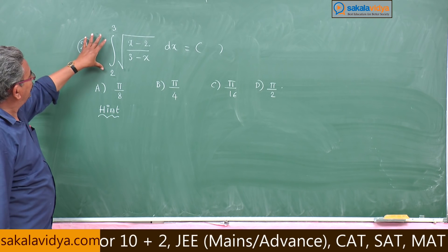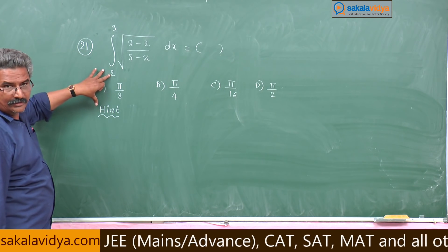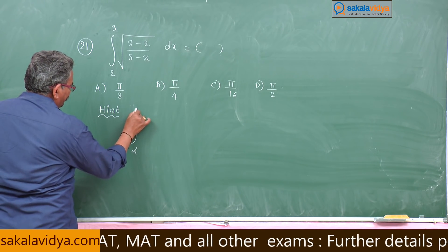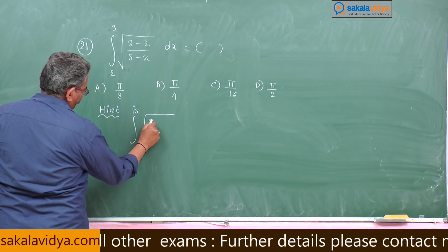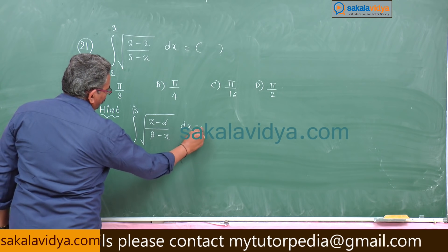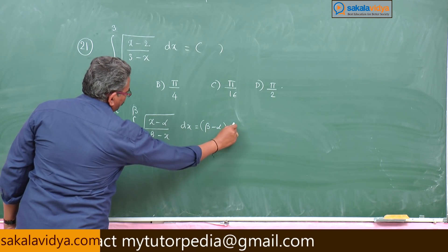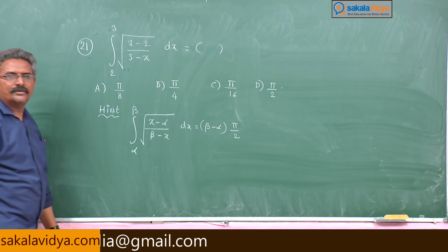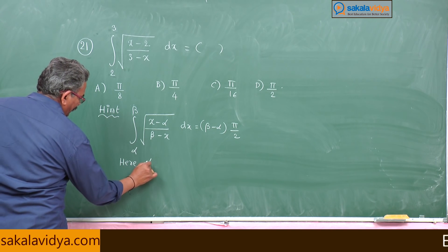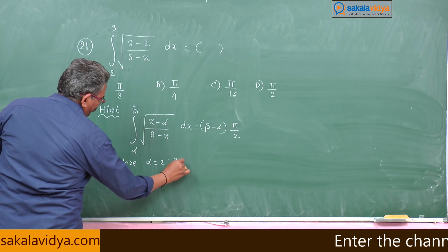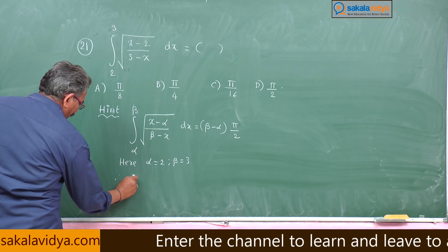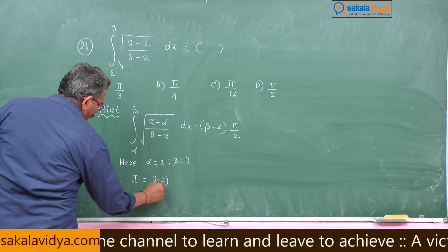So this is given by (beta minus alpha) times π/2. That means the integral from alpha to beta of root of (x minus alpha)(beta minus x) dx is equal to (beta minus alpha) times π/2. Now here alpha is equal to 2, beta is equal to 3. Therefore I is equal to (3 minus 2) times π/2.